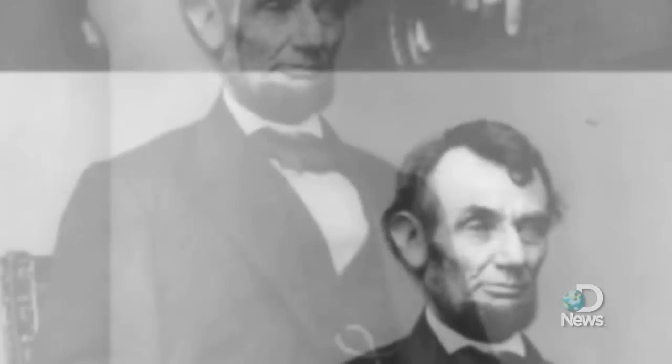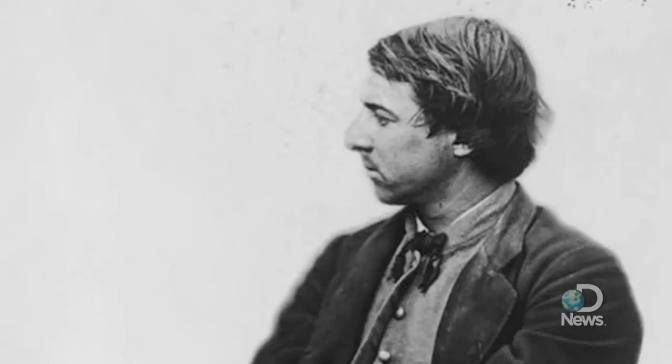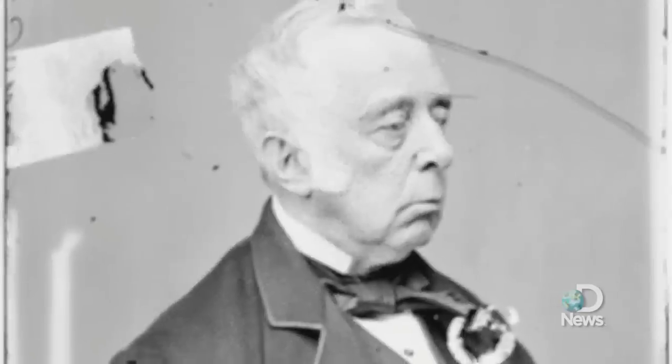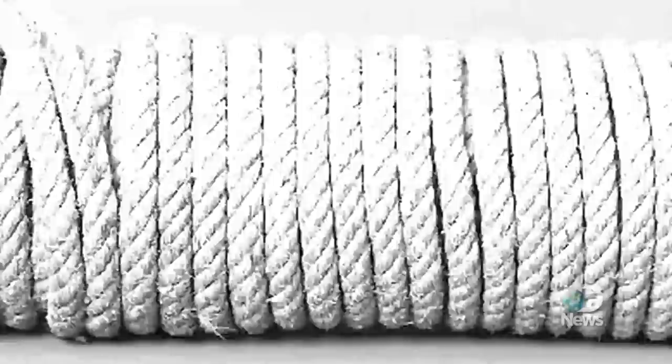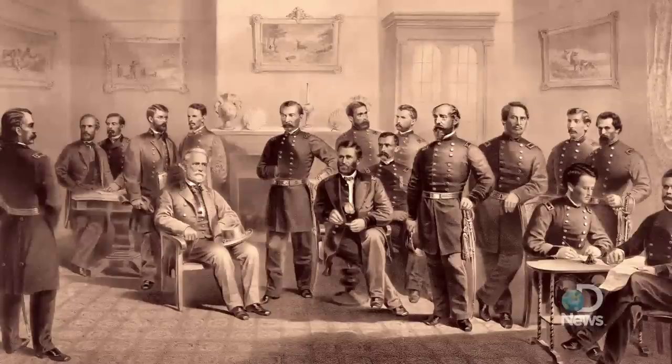But Booth's murder of President Abraham Lincoln is only part of the story. The rest is a hastily designed plan involving Southern sympathizers, abandoned kidnappings, wartime trials, and an attempt to decapitate the Union government just days after the end of the Civil War.